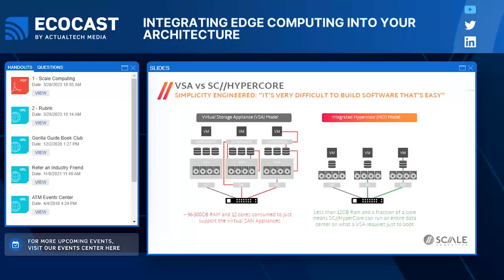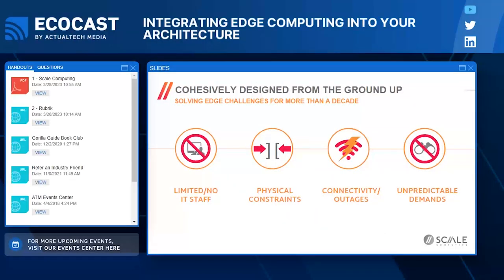We have systems that go as small as 16 gigabytes of RAM and just a few cores, which is more than adequate for a lot of edge applications. Being efficient on resource utilization is very important. This edge solution was designed cohesively from the ground up, and we've been expanding it for more than a decade. We understand that edge environments often have limited or no IT staff, so we recently introduced zero-touch provisioning: the central IT team configures what the system should be, ships it out, a store manager plugs in power and network cables, and the system phones home and configures itself.